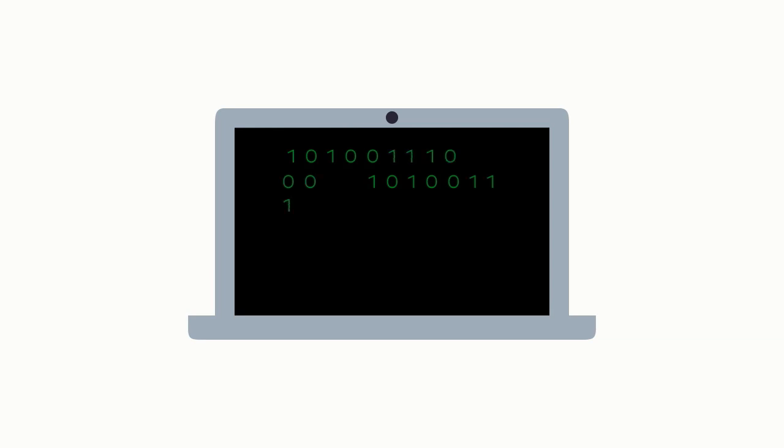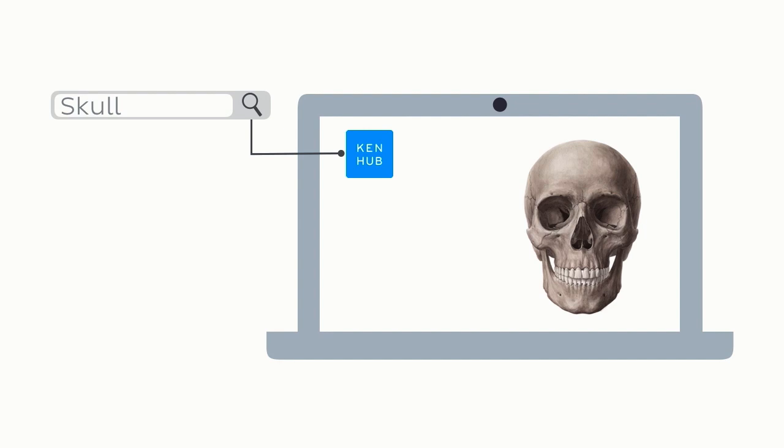You may not even realize it, but as you're using your laptop to study, your computer is exchanging and processing information using a binary code of ones and zeros. For example, when you type in Skull into Kenhub's search bar, your computer uses this cryptic language to receive information from the website.